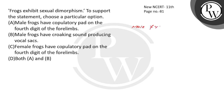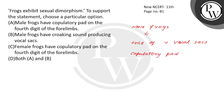Male frogs can be distinguished by the presence of sound-producing vocal sacs. Vocal sacs — what do you get inside them? They also have copulatory pads on the first digit. This is about the male frog. How do you see the female frog? These features are absent in females.